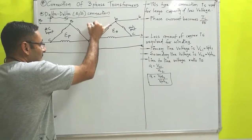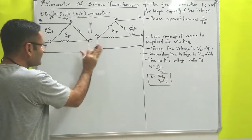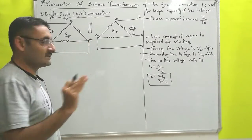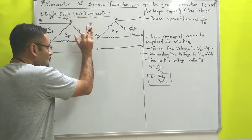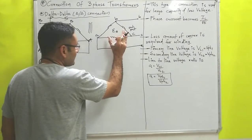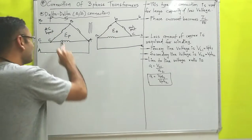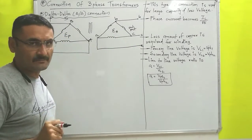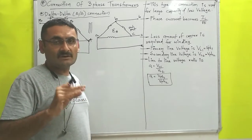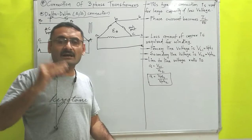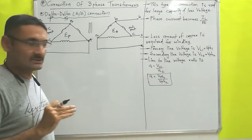After that we will draw three lines which indicate that both primary and secondary windings are electrically coupled — that means with the help of the mutual induction process, EMF ES is induced in the secondary winding by EP. That is the symbolic representation. Now we will try to draw the actual connections.